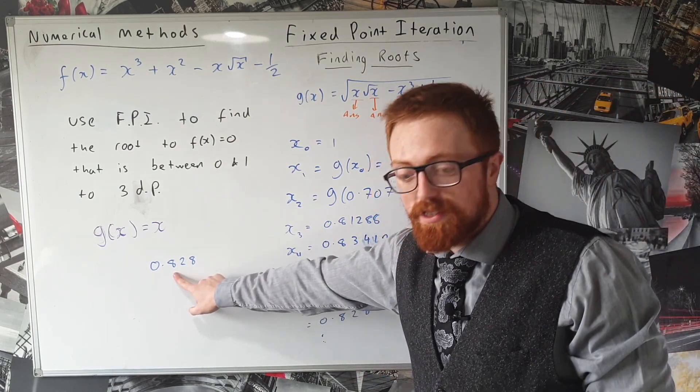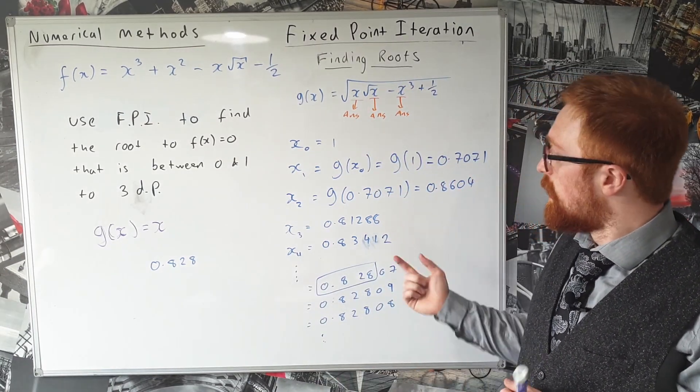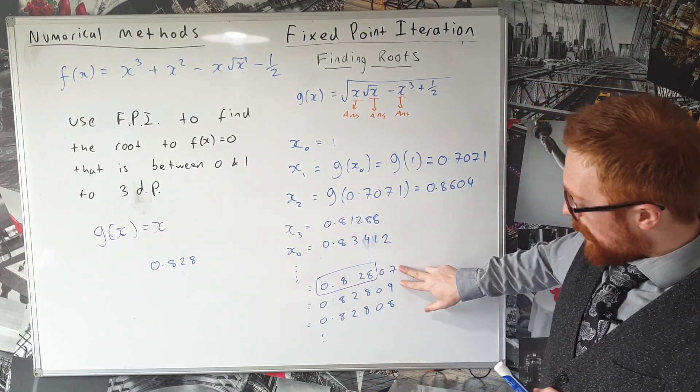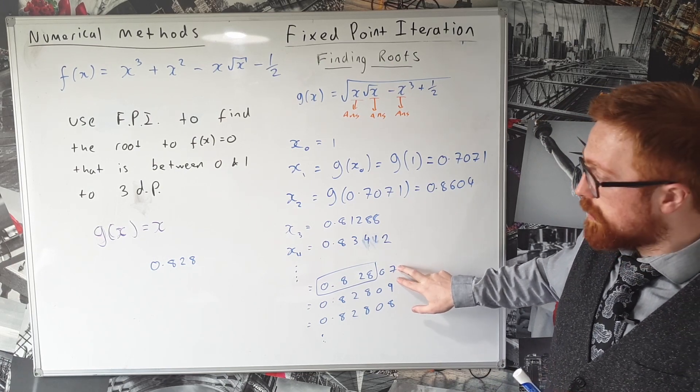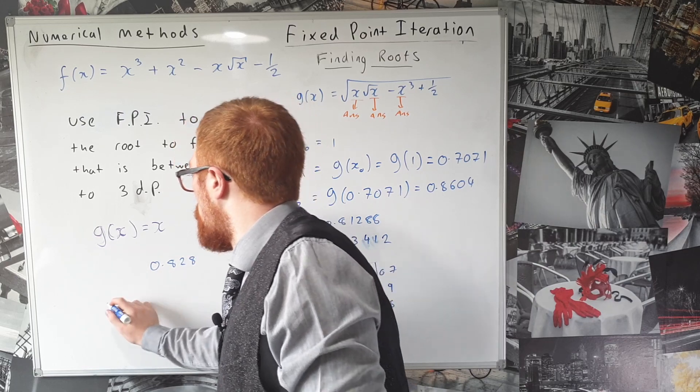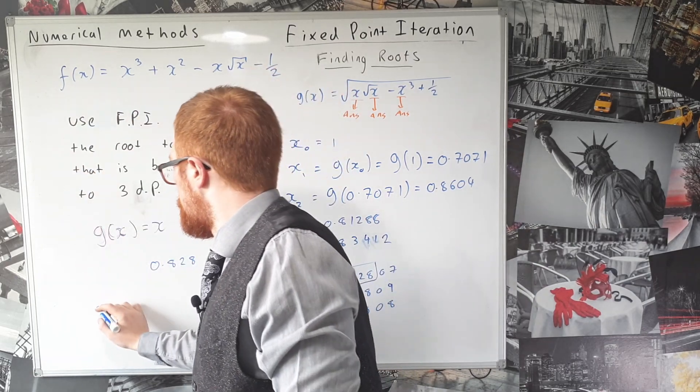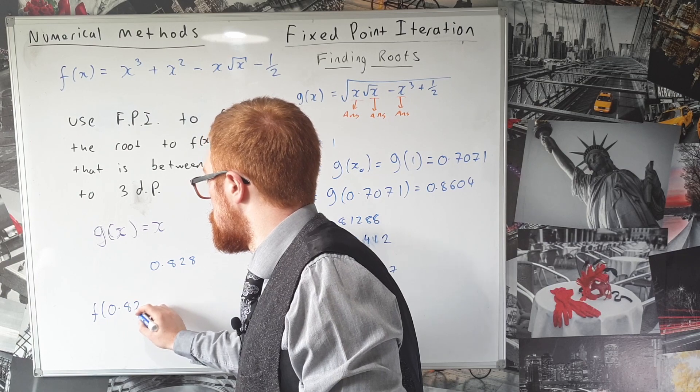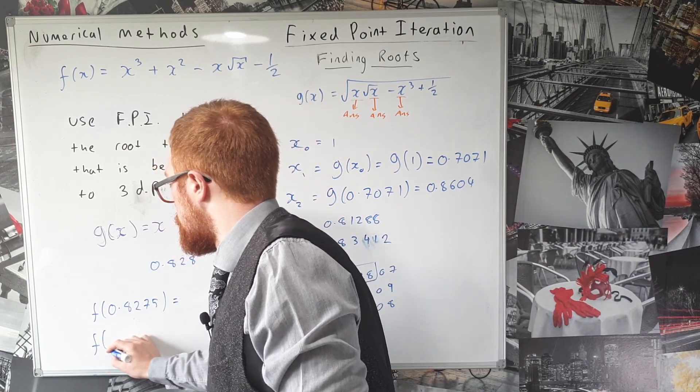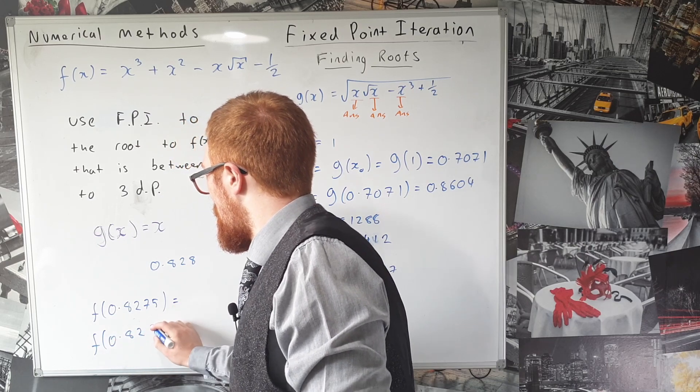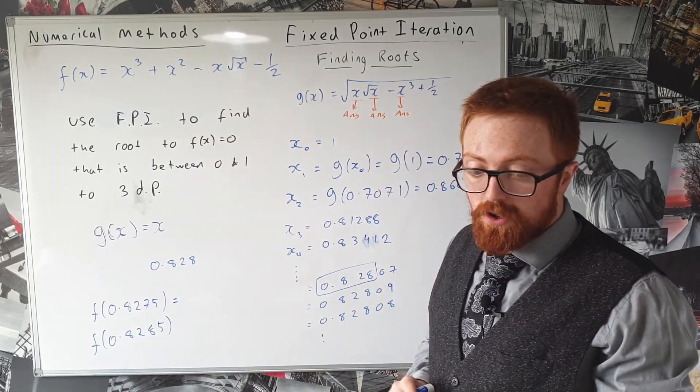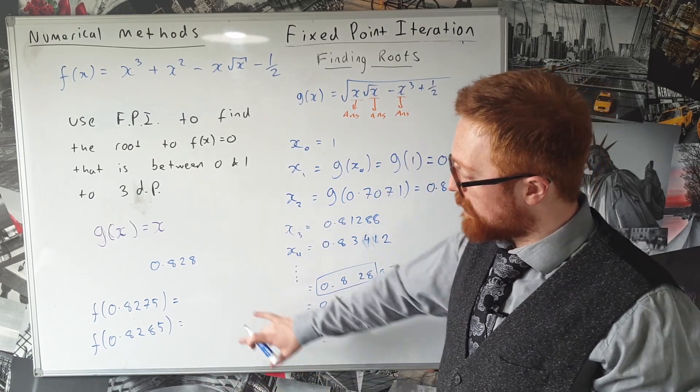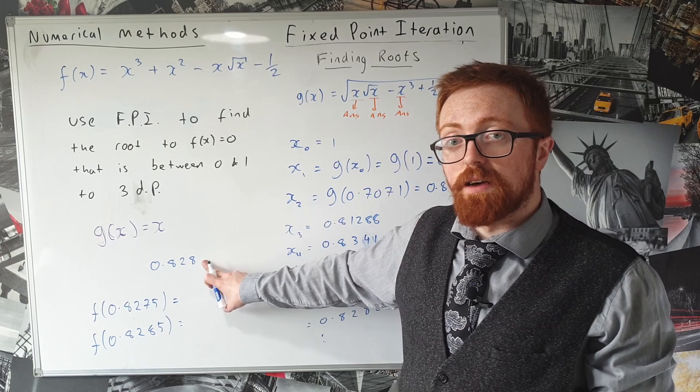So if we think our answer is 0.828 accurate to three decimal places, thinking back to our finding roots video, to be absolutely 100% certain if it's not bound between the previous two estimates, we have to substitute in or we have to find f of, well the lower bound for this to three decimal places is 0.8275, and we'd need to calculate f of 0.8285. And what you'll get is that one of these is above the x-axis (one of these is positive), one of these is below the x-axis (one of these is negative). So then because we've got a change of sign, you can show that that is the correct root.